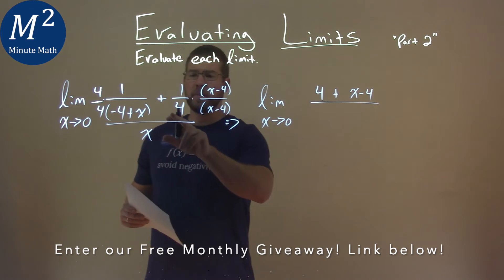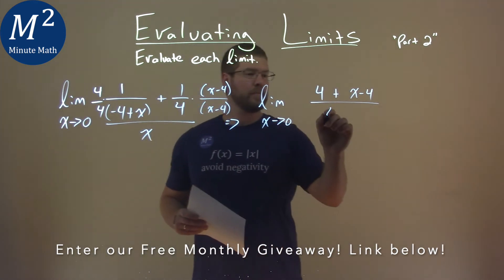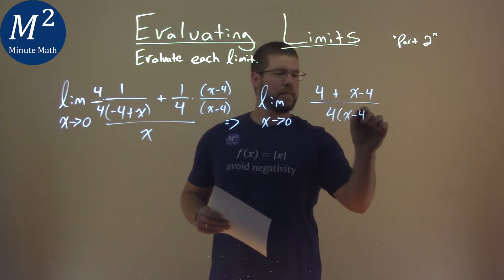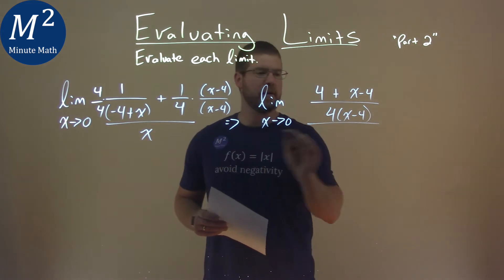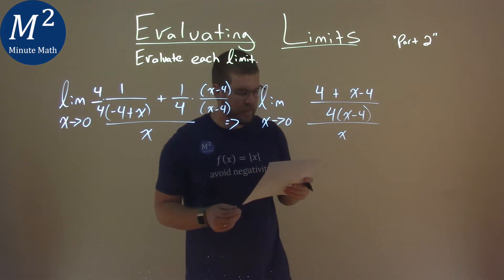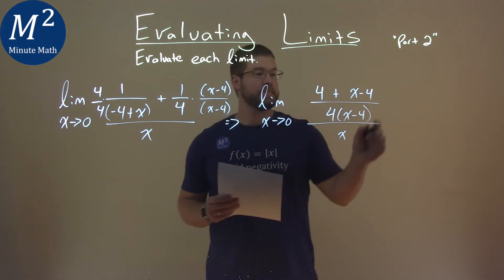And the denominator is 4 times x minus 4, and that's all over that good old x here. Now, this is pretty nice. These 4s cancel, right?